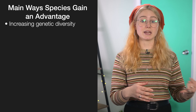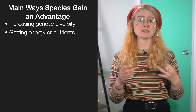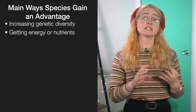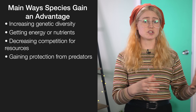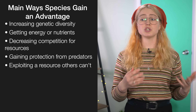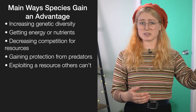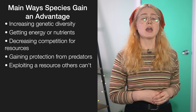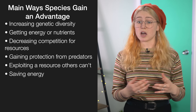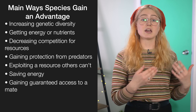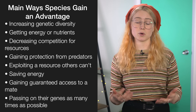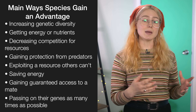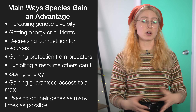Quite commonly these survival advantages come about by increasing genetic diversity, like having pollinators for trees; getting energy or nutrients, like plants moving towards the sun; decreasing competition for resources by killing others; gaining protection from predators such as moving in groups; exploiting new resources others can't, like plants using the sun and animals eating meat; saving energy such as hibernation; guaranteed mate selection such as mating for life; and passing on as many of your genes as possible, as seen in polyamorous species such as seals that have harems and colonies.